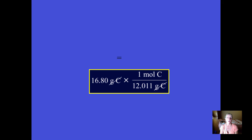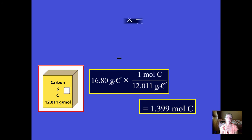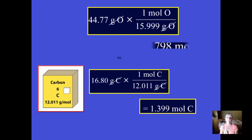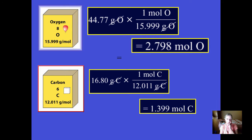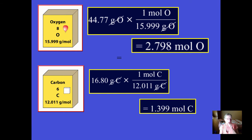Now we'll do the same thing with oxygen and carbon. Here is the carbon being converted into moles, and here is the oxygen being converted into moles. Notice that for both values we carry the result out to three digits to the right of the decimal point. You'll see why in just a moment.